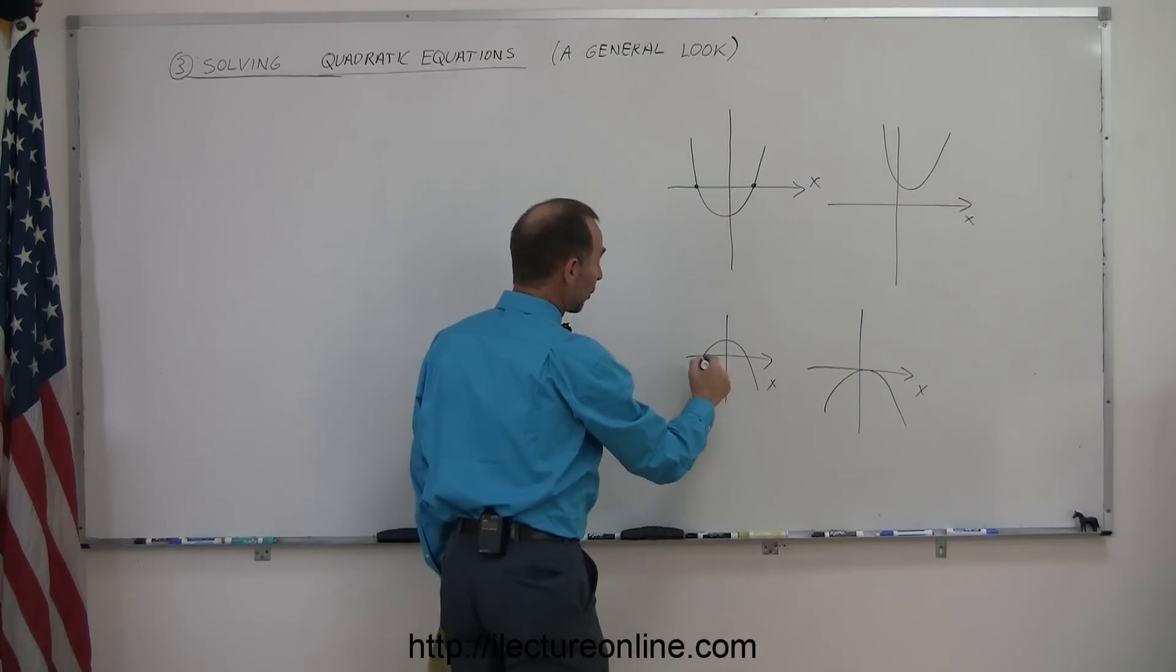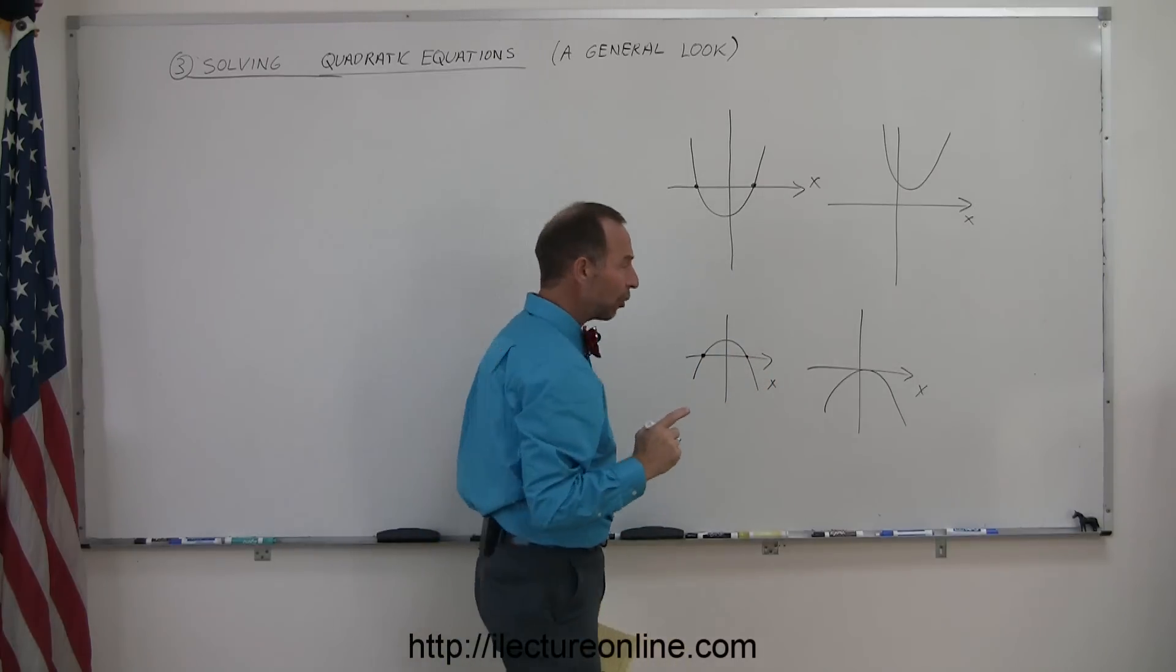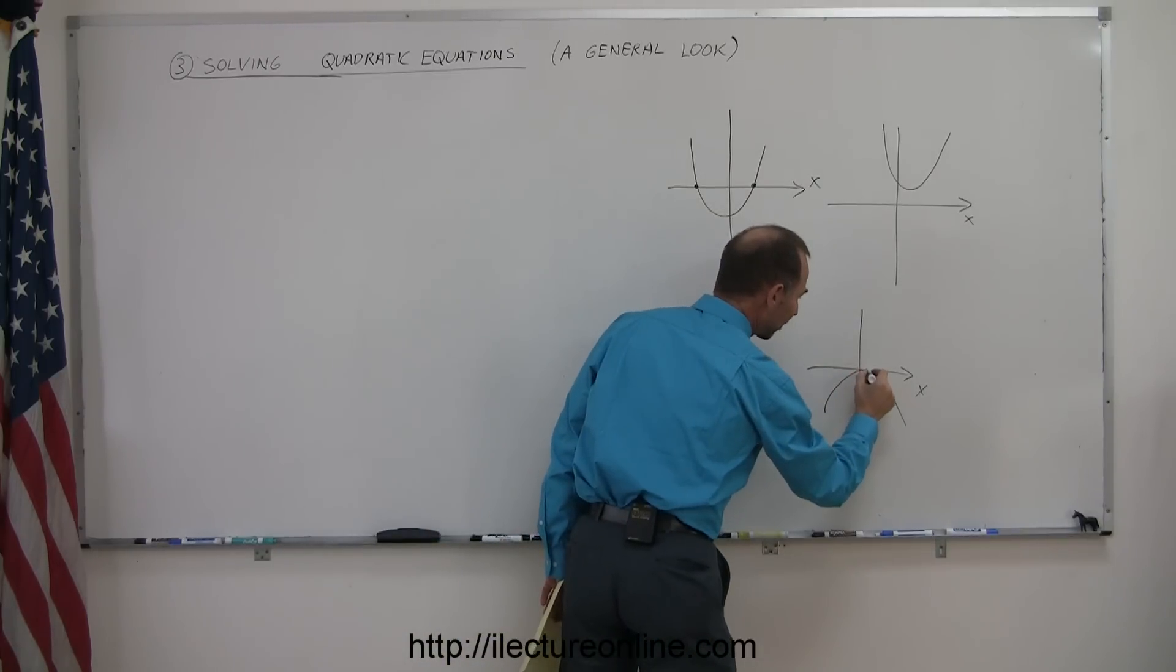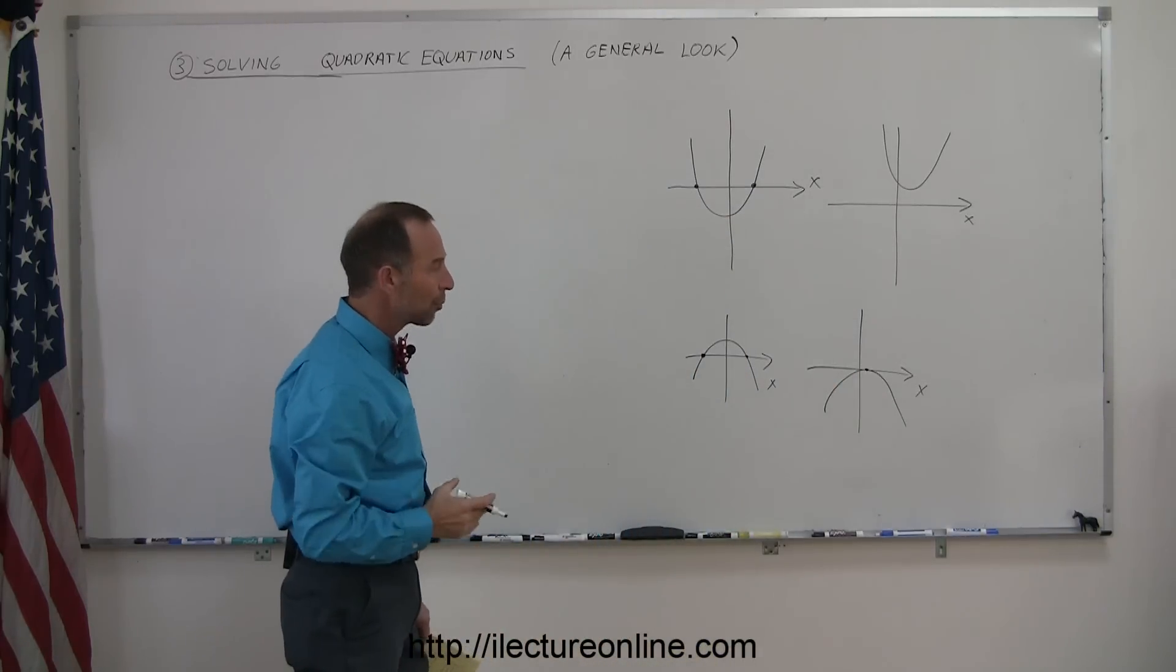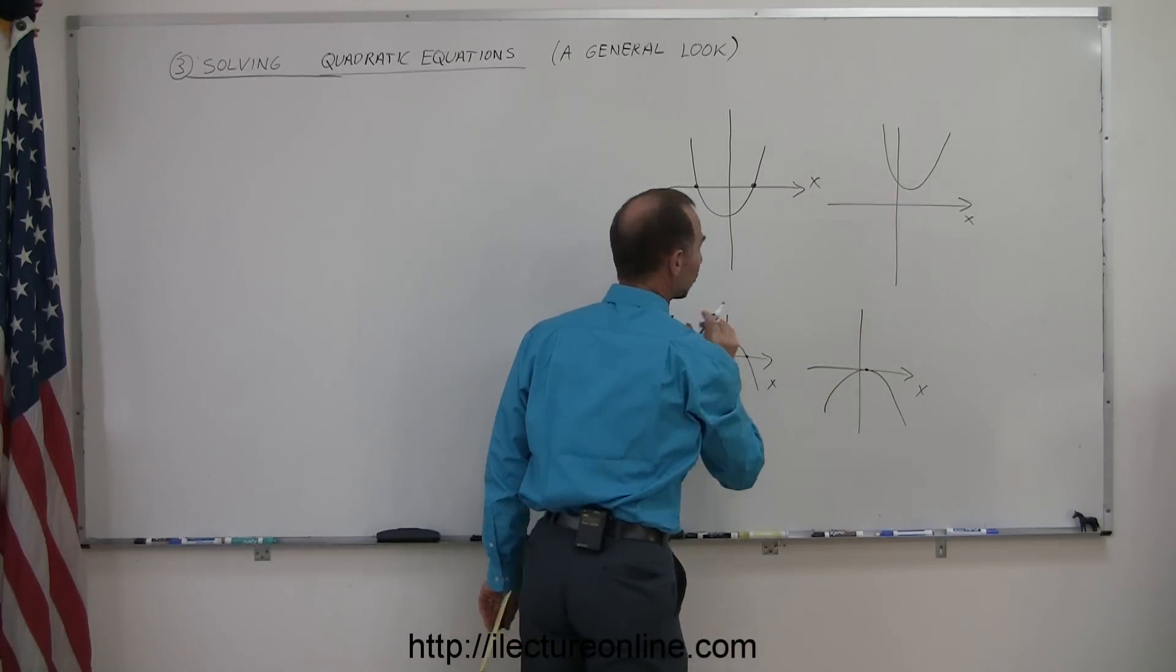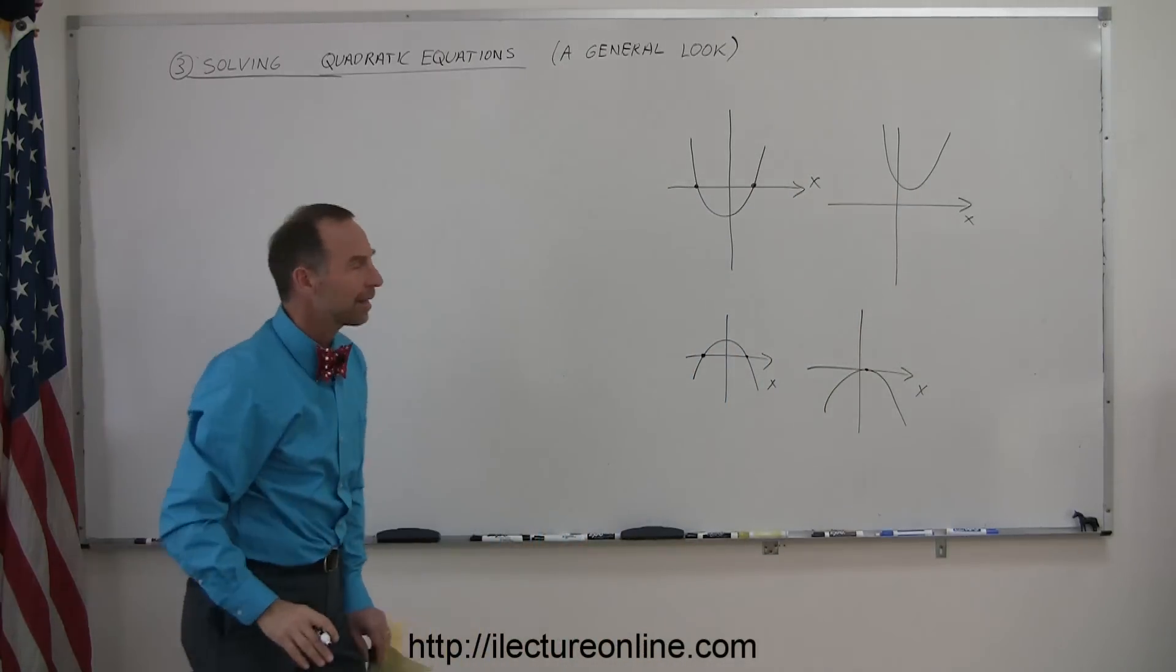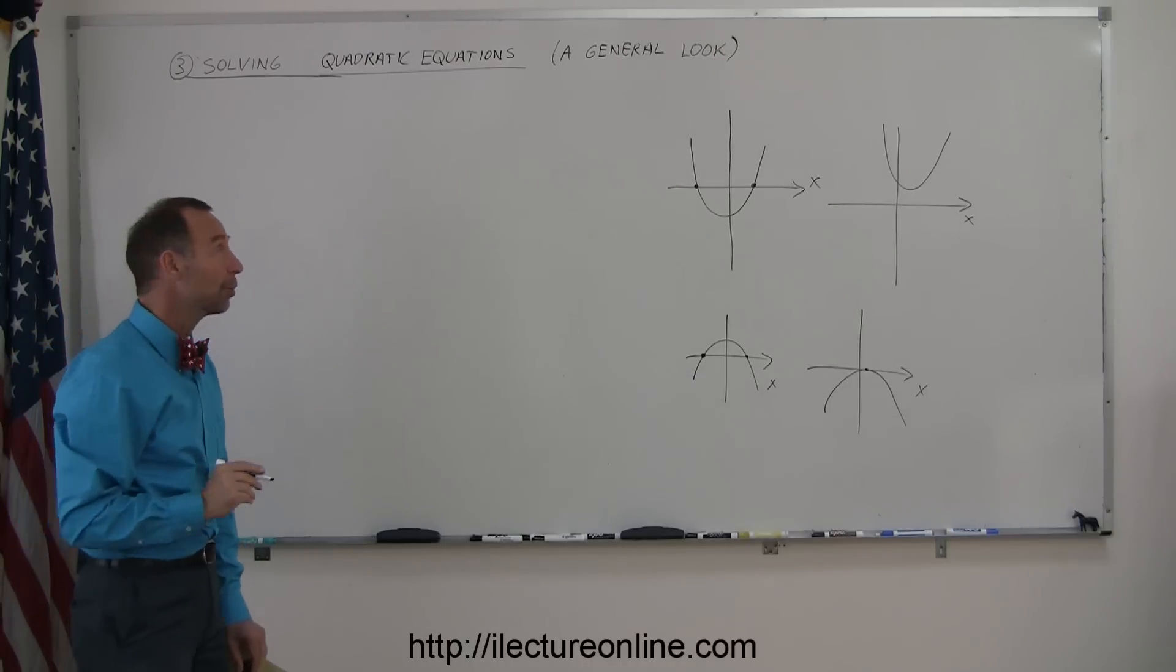In this case, even though it opens downward, there are two roots. And in this case, there is only one root right there. It actually only touches the x-axis at one particular point. It opens downward, so in this case there's only one solution or one root. There's none there, there's two there, there's two there. And how do you know that ahead of time before you start solving the quadratic equation? Well, there is a way in which you can figure it out.